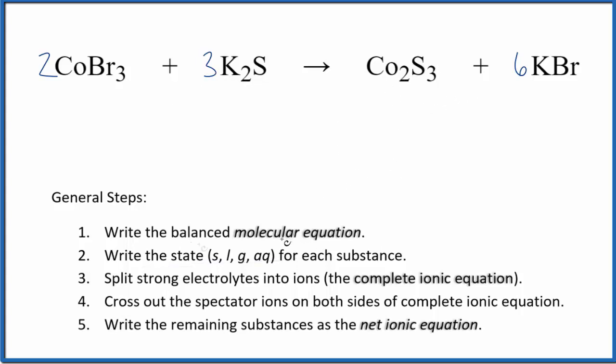Now we need to write the states, and that'll look like this. Compounds with bromine in them, in general they're soluble, so aqueous. Compounds with potassium, in general they are soluble. But this cobalt sulfide here, general sulfides are insoluble, so this is a solid. It's a precipitate in this reaction. It falls to the bottom of the test tube.